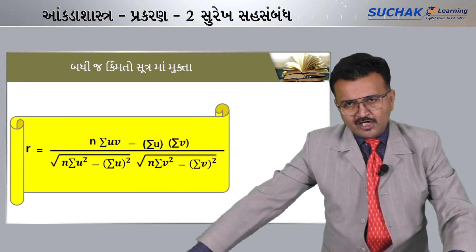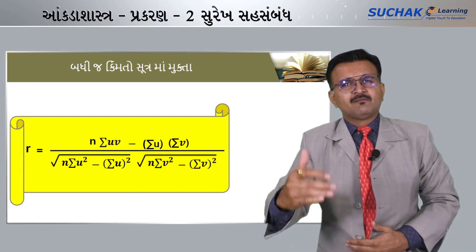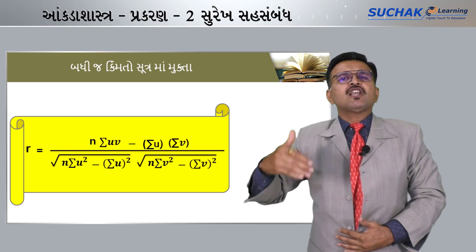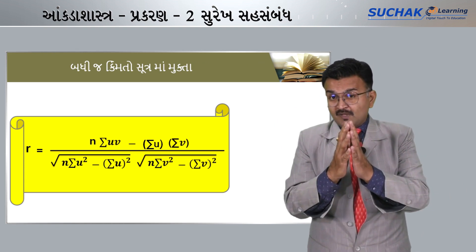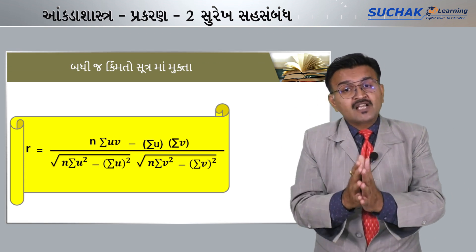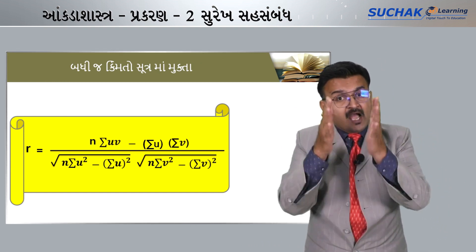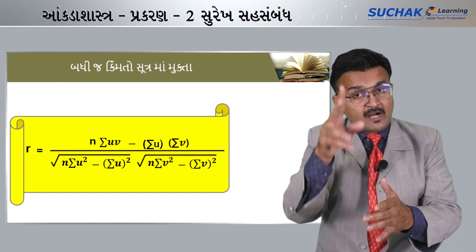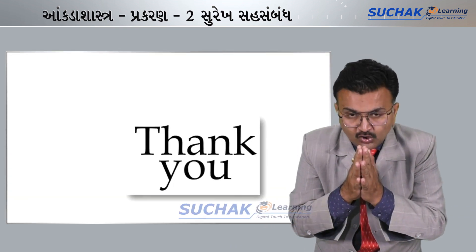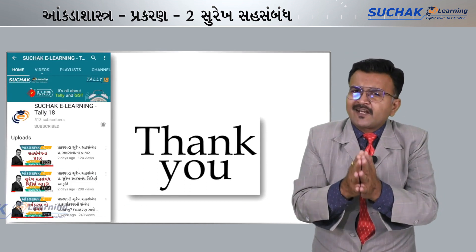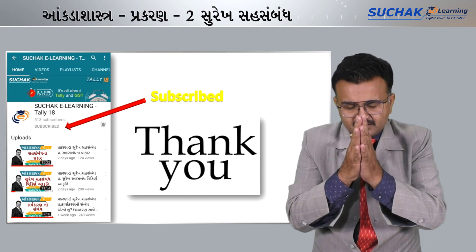Put all values into the calculator — takatak takatak — and you get Karl Pearson's correlation coefficient r. By using this direct subtraction method (Toki reet na sutra no upyog), you will get the answer easily. In the next session, we will solve two examples using this same method. If you are not subscribed to this channel, please subscribe, share this video, and comment your suggestions. Jai Bharat Jai.